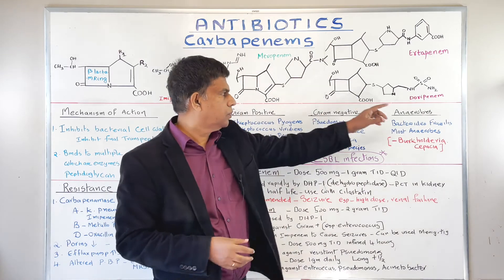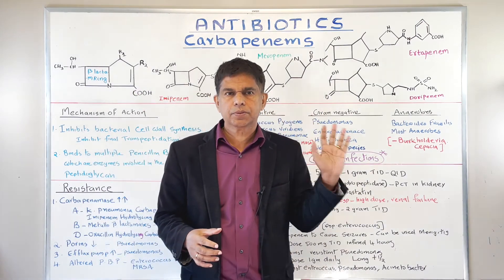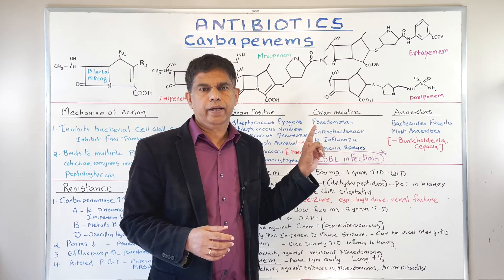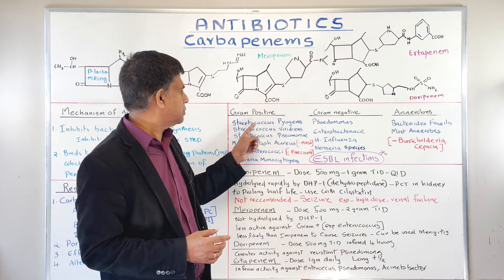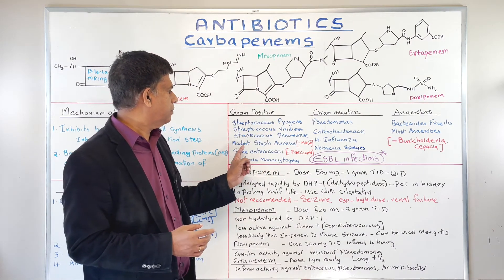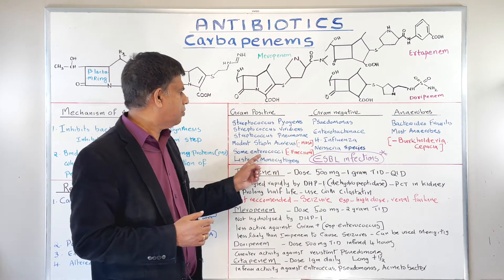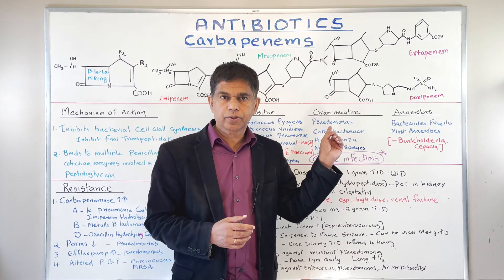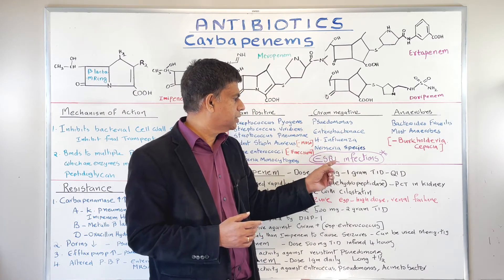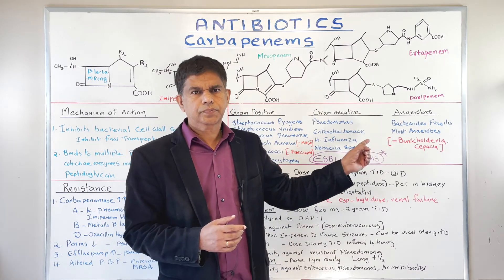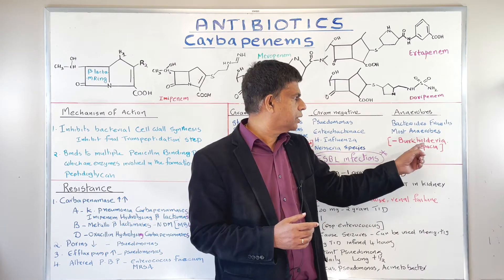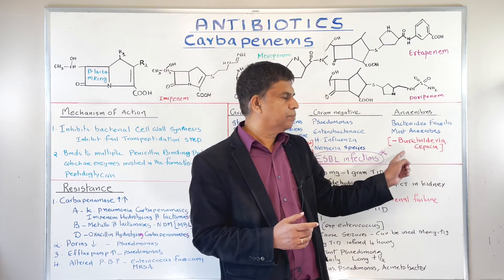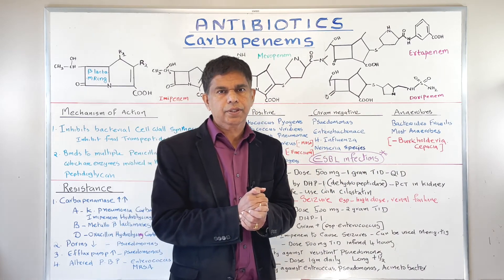Now let's look at the spectrum of coverage. The key word is ESBL — carbapenems are very active against ESBL infections. For gram-positive coverage: Streptococcus pyogenes, Streptococcus viridans, Streptococcus pneumoniae, and some Enterococci, plus Listeria monocytogenes, though activity is modest. For gram-negatives: good Pseudomonas coverage, H. influenzae, and Neisseria species. Good anaerobic coverage includes Bacteroides fragilis and most anaerobes. One exception: carbapenems do not cover Burkholderia cepacia.